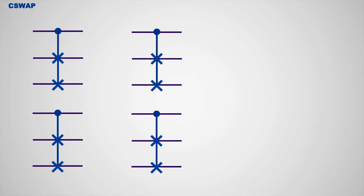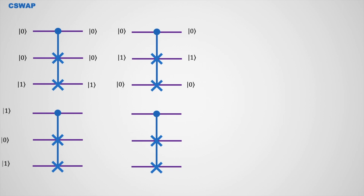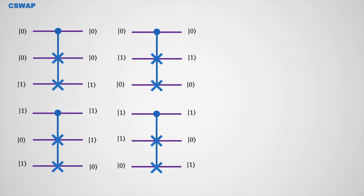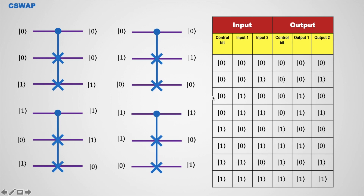This is a 3-qubit swap gate where the number of control bits is 1. In a 3-qubit swap gate, if the control bit is in |1⟩ state, then and only then swapping is possible. If the control bit is in |0⟩ state, there is no change in the output. If the control bit is in |1⟩ state, then swapping is done between the qubits.